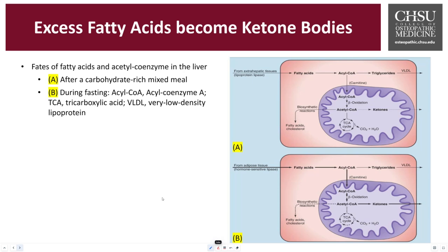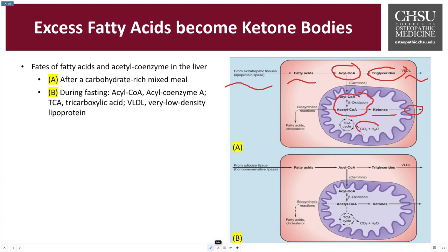Here is a visual showing the fates of fatty acids and acetyl-CoA in the liver. After a big carbohydrate-rich meal, lipoprotein lipase, LPL, takes in fatty acids, which are converted into acyl-CoA in the priming step. Acyl-CoA can then become triglycerides and be exported as VLDL, or it can enter the mitochondria with carnitine, go through beta-oxidation, and lead to acetyl-CoA. Acetyl-CoA can then lead into ketone bodies or enter the TCA cycle for energy production.